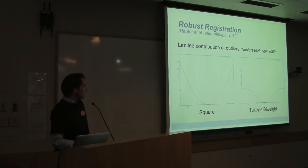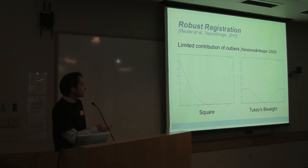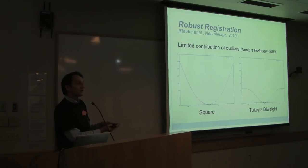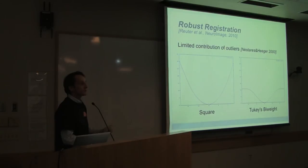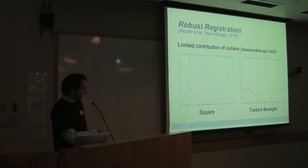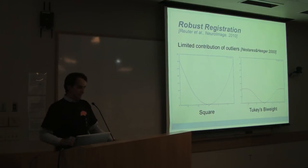The idea of robustness is also straightforward. Usually you compute squared error in registration, so a large local error has a large contribution to your cost function — a large voxel difference dominates the registration. To avoid this, we switch to the QB function. With a large error, it has only a limited influence on the registration because this function flattens out. That's the math behind robustness.